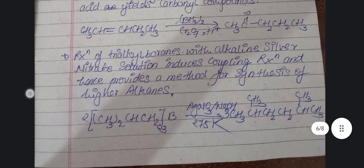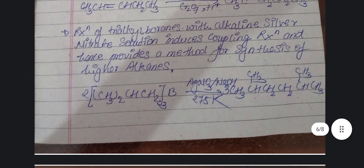Now the reaction of trialkyl borane with alkaline silver nitrate. When organoborane reacts with silver nitrate, it undergoes a coupling reaction, and hence provides a method of synthesis of alkane. It also gives alkane, but not a simple one — it is a coupling reaction that gives alkane.